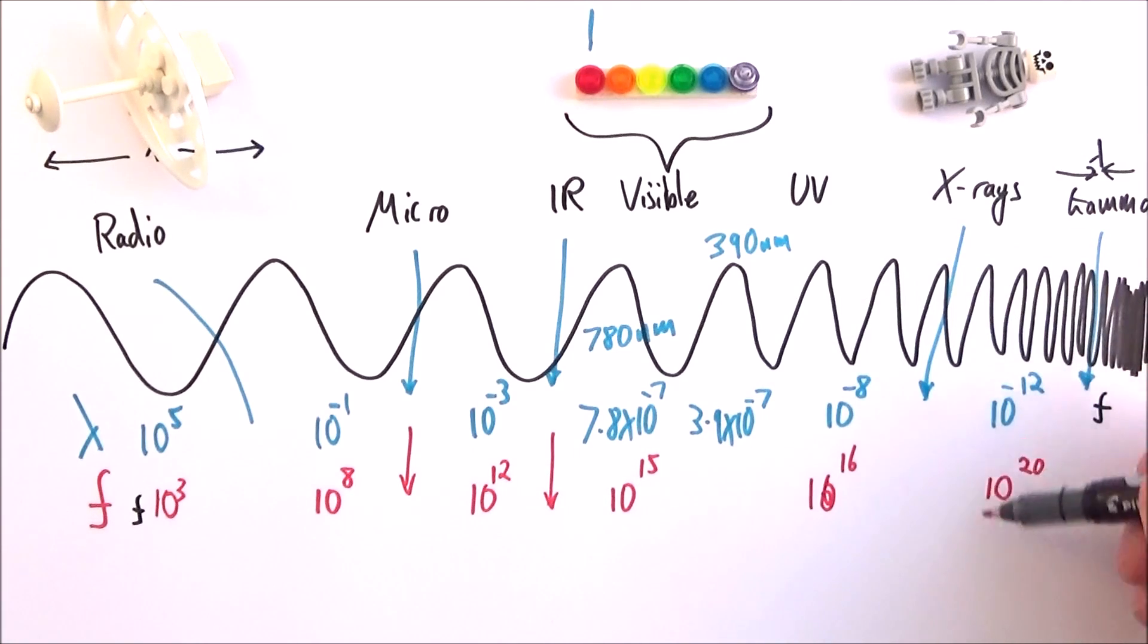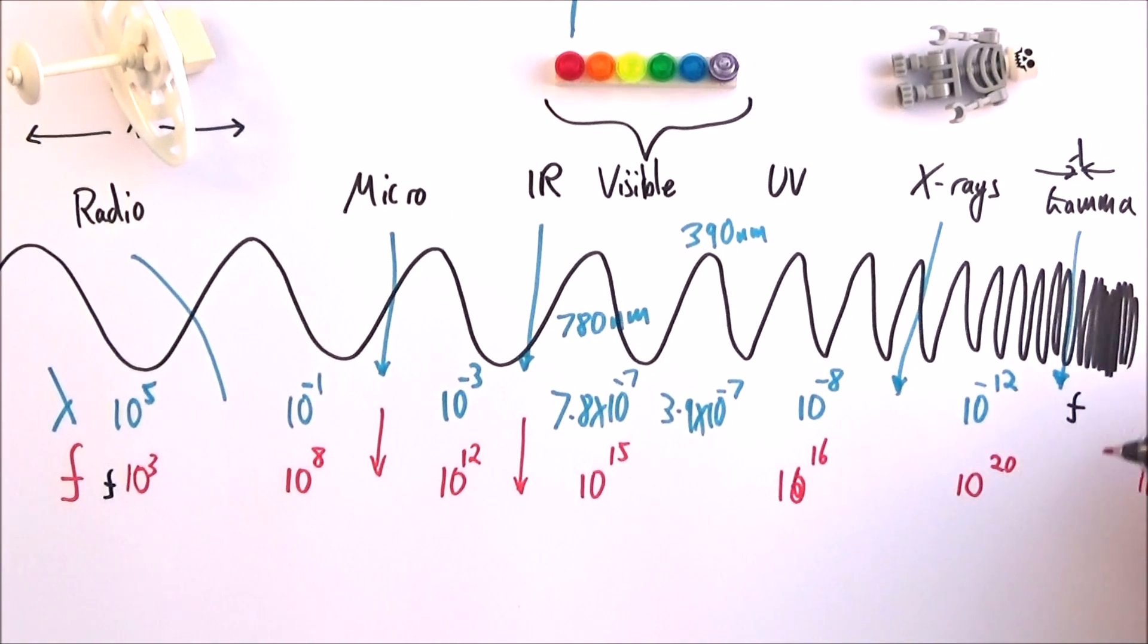X-rays, 10 to the 16 to about 10 to the 20. And then anything that vibrates quicker than that, 10 to the 23 times per second is going to be one of these gamma rays.